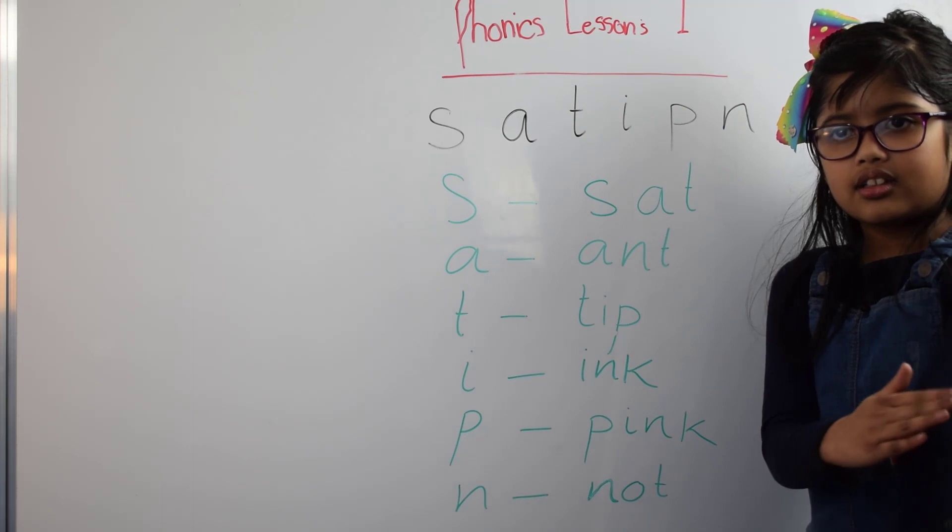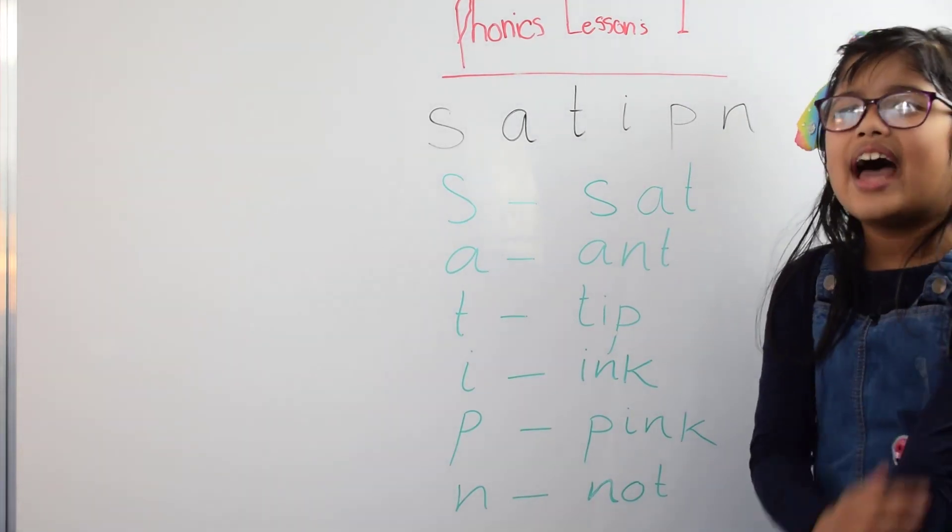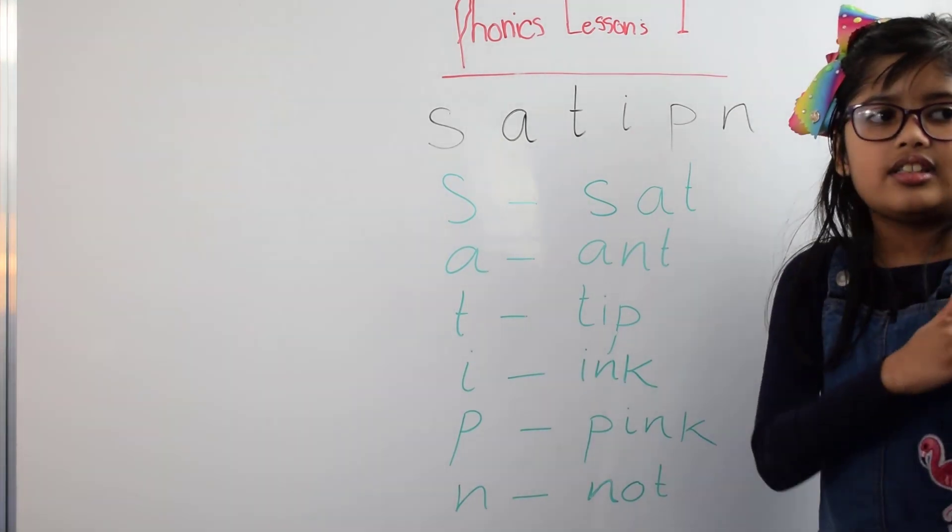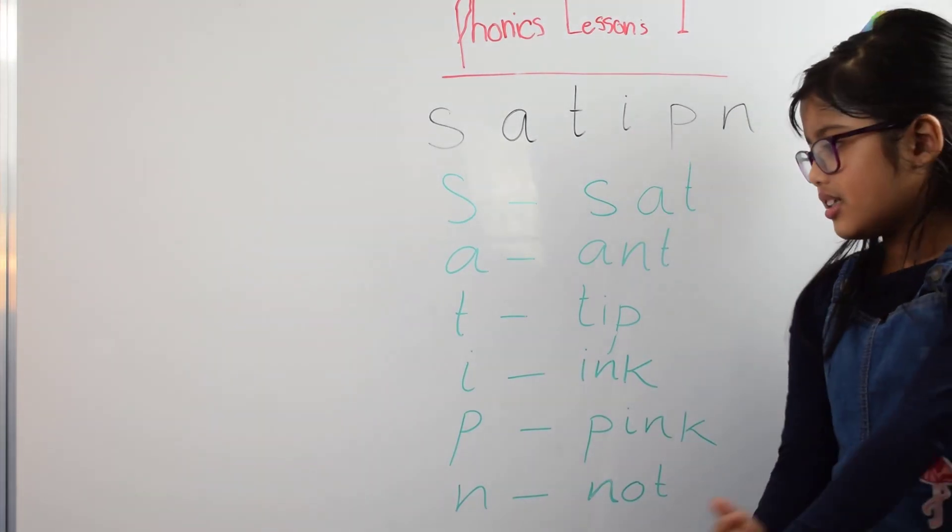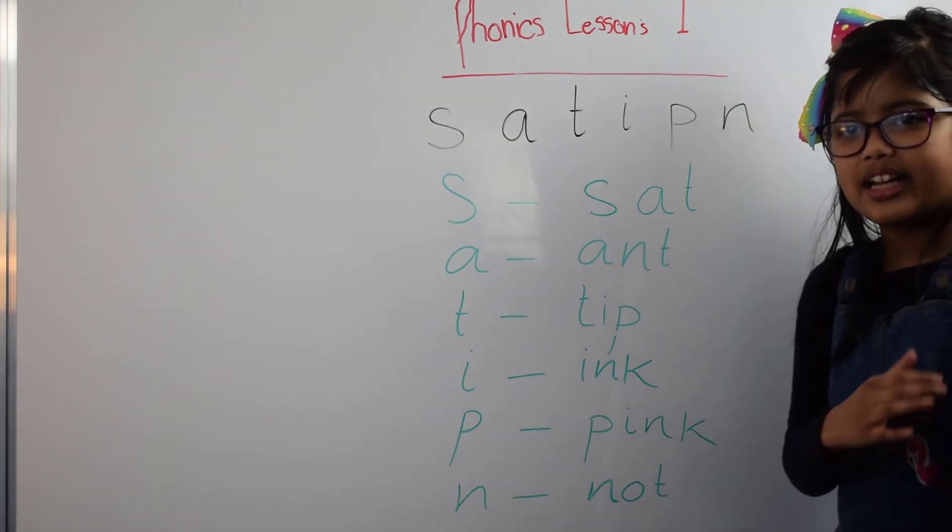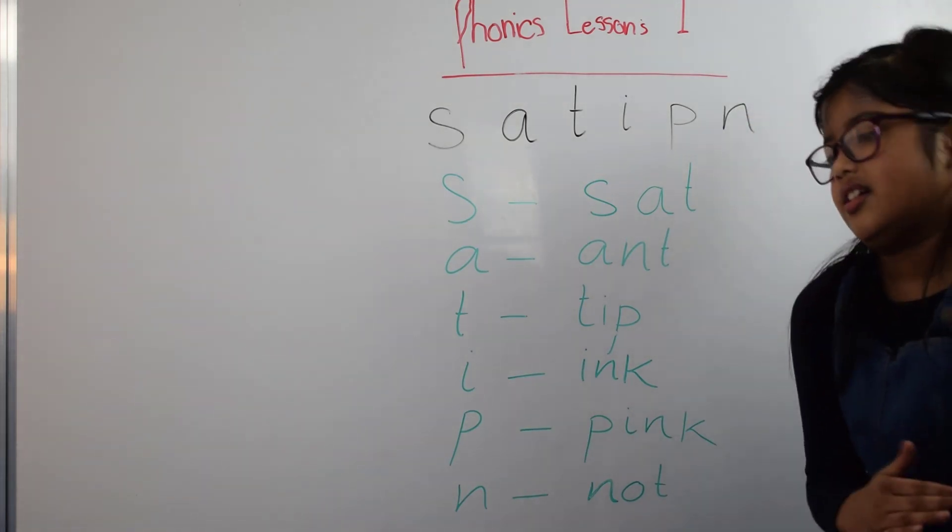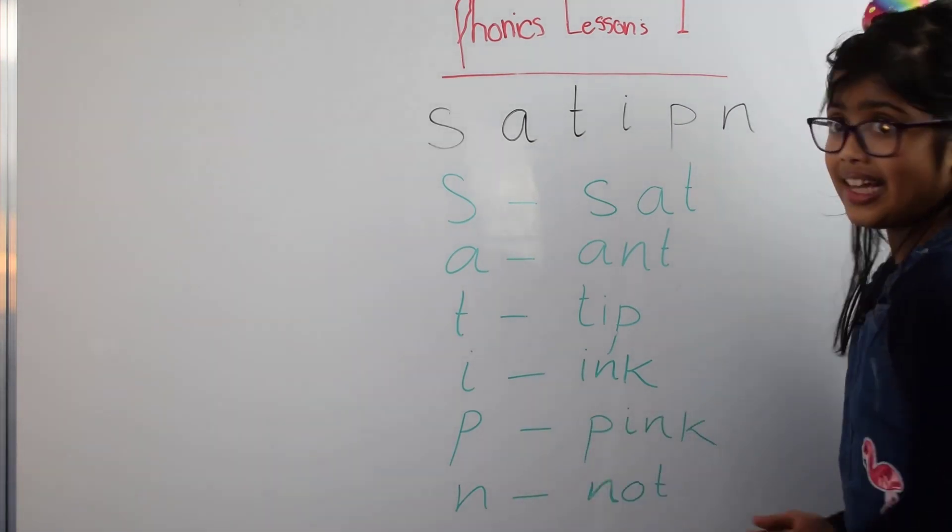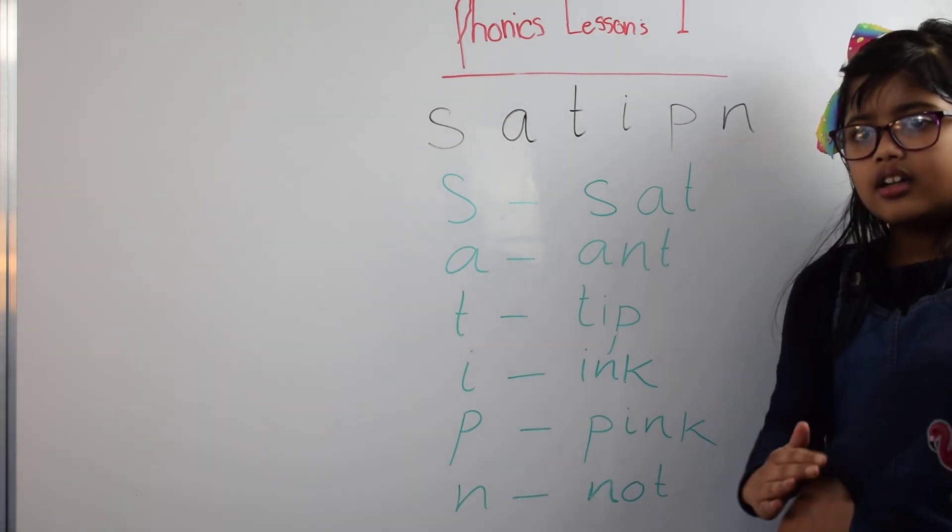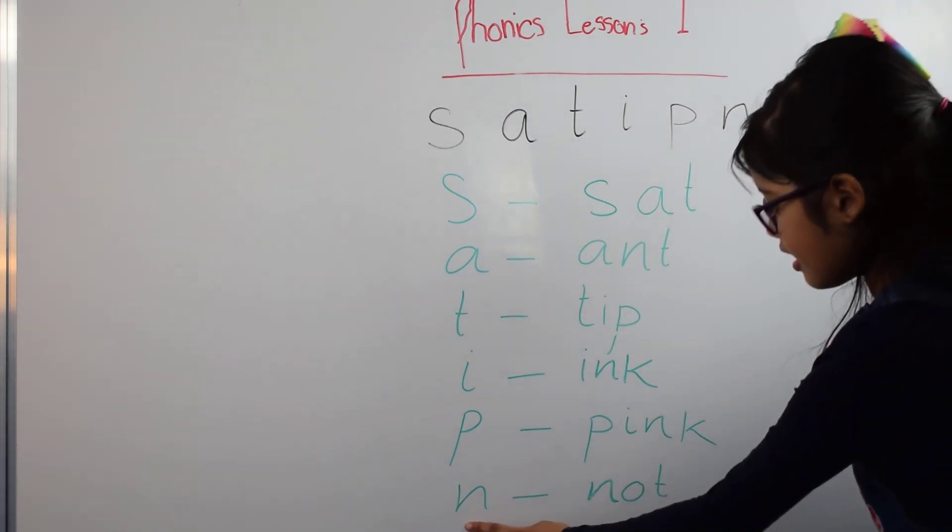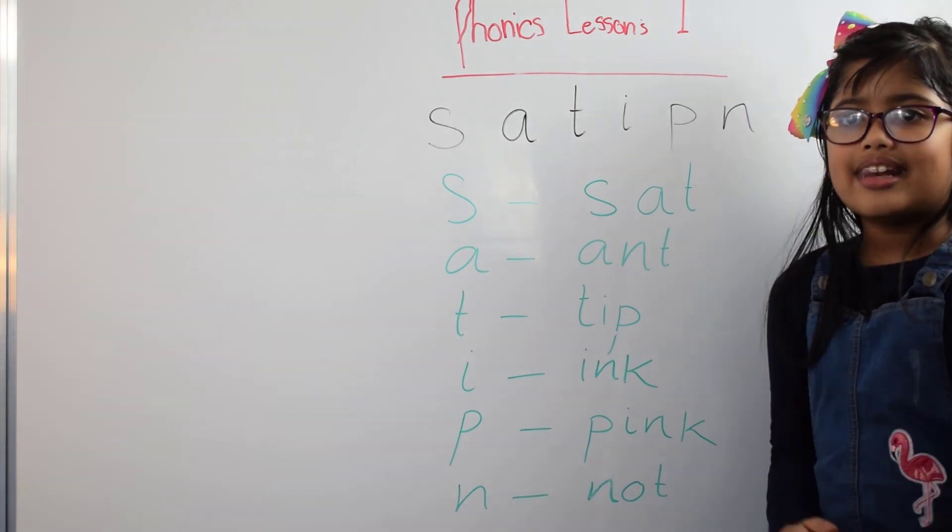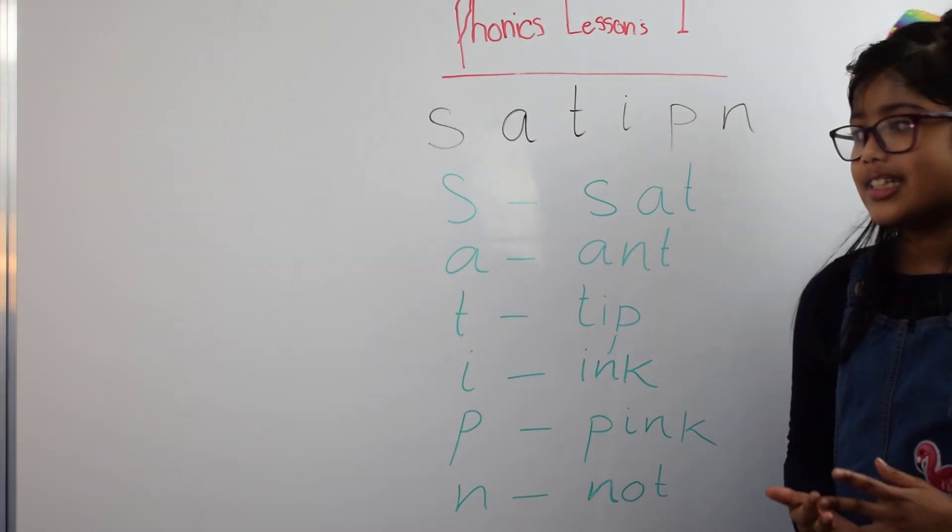T for tip, like a tip of a pencil, T-I-P tip. I for ink, like those drops from the ink bottle, I-N-K ink. P for pink, the color pink. N for not, N-O-T.